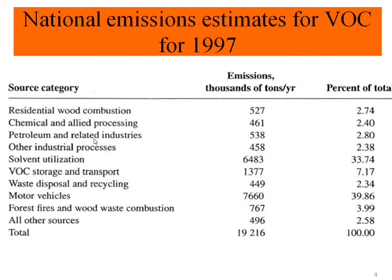When we say lighter, it means those products are more volatile — typically smaller molecules with smaller structures are more volatile compared to heavier petroleum products. Lighter products tend to volatilize much faster, so they are usually classified as VOCs. Another source of VOC production is solvent utilization and VOC storage and transport.